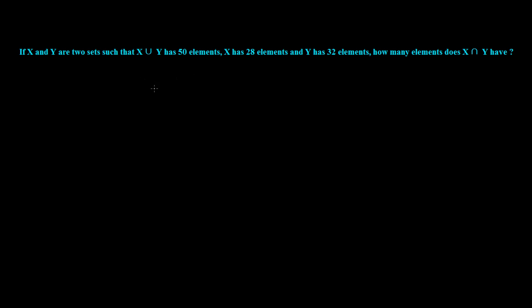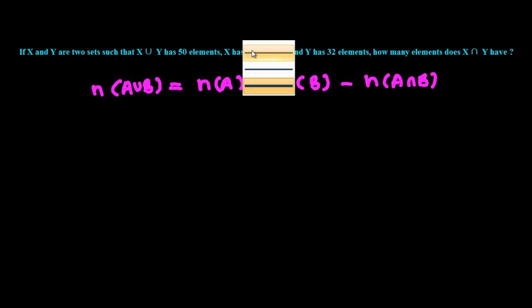Recently we have learned the union formula. If we have a set A union B, then the total number of elements in set A union B is actually the sum of the total elements in set A plus total elements in set B minus total elements which are in common between A and B. Now based on this formula, let's try to solve this question.